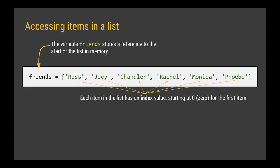Each of the items in the list has its own index value, which starts at zero for the first item. So Ross is index zero, Joey is index one, Chandler is index two, and so on. The reason it starts at zero is because that index value is actually an offset — how many places away from the start of the list. Ross is the start, so its index is zero because it's no spaces away from the start. Joey has an index of one because it's one place away from the start.